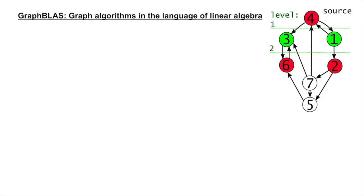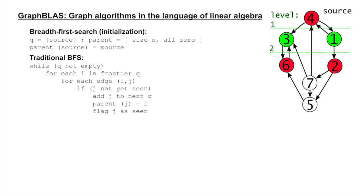Consider a breadth-first search starting at node 4 with a frontier of nodes 1 and 3. The next frontier has nodes 2 and 6. This traditional algorithm is simple to state, but as graph algorithms get more complex, the node and edge-centric model gets harder to write, particularly in parallel.